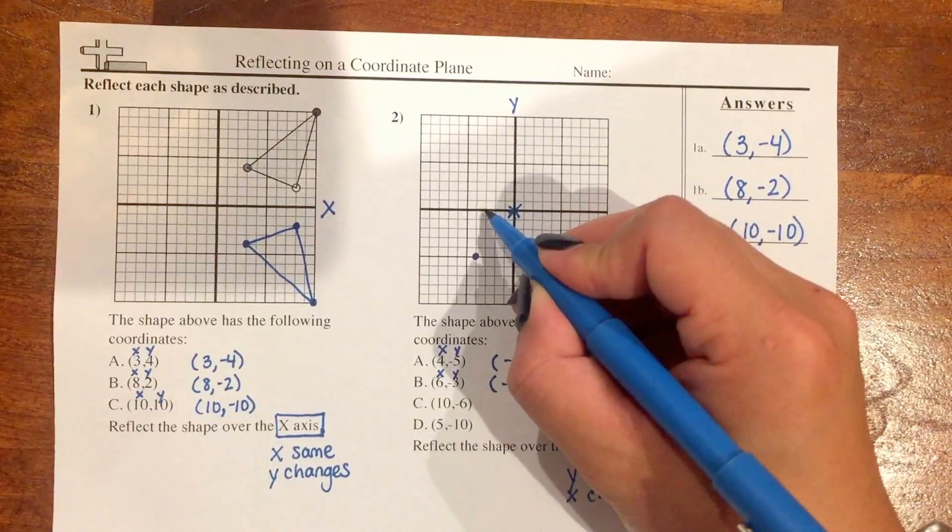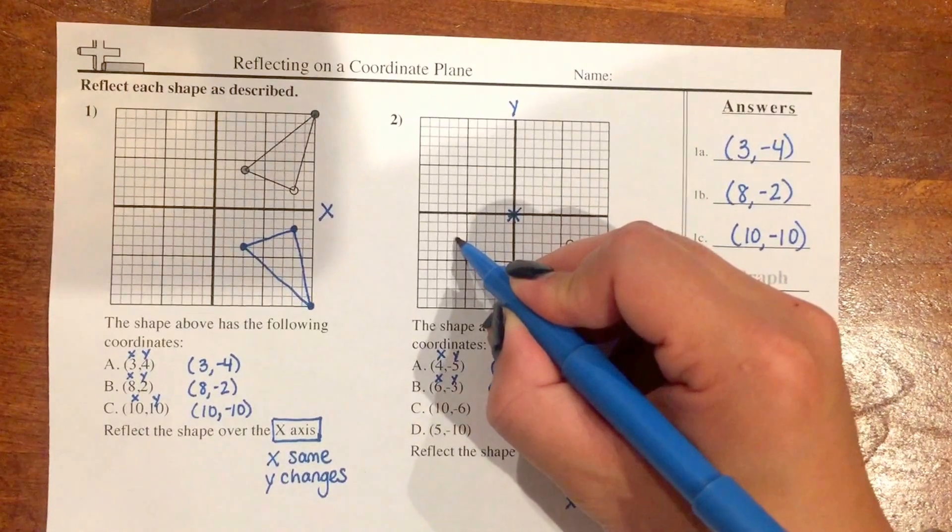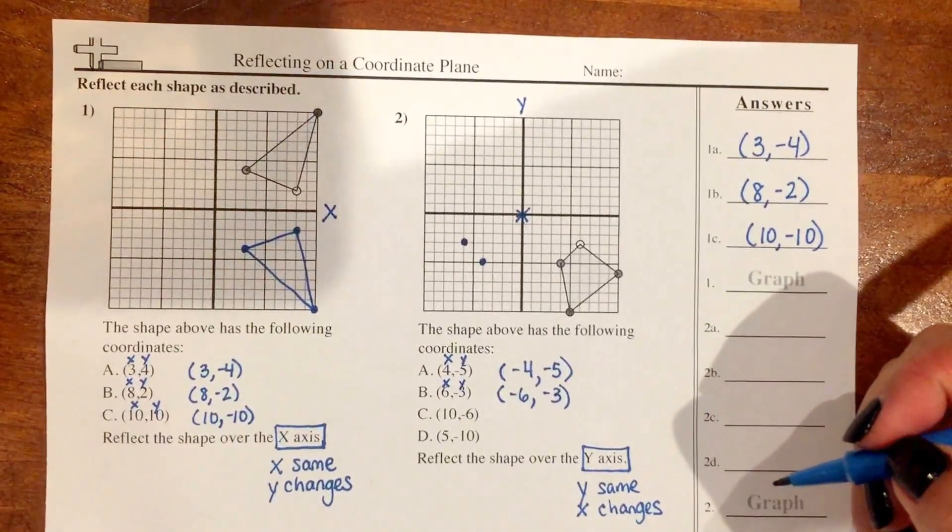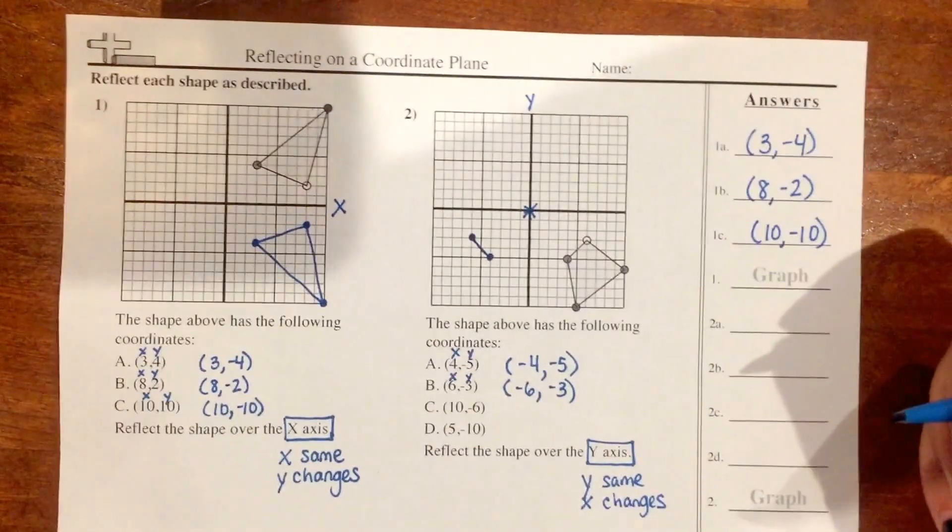So I'm going to go to the left 6 and down 3. And because I have two points that are creating a shape, I'm going to connect them.